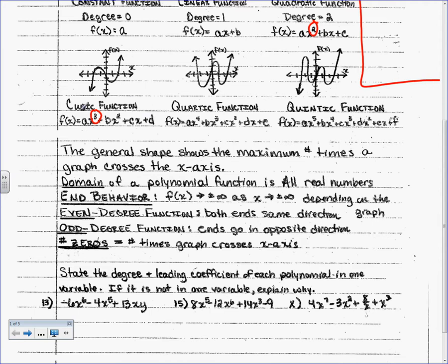Positive — that's a positive LC. Quartic: quarter, four. X to the four — degree would be four. Even, so both go up — that would be a positive LC. Quintic: five. Odd, opposite. It goes like that — so positive or negative LC? Positive.